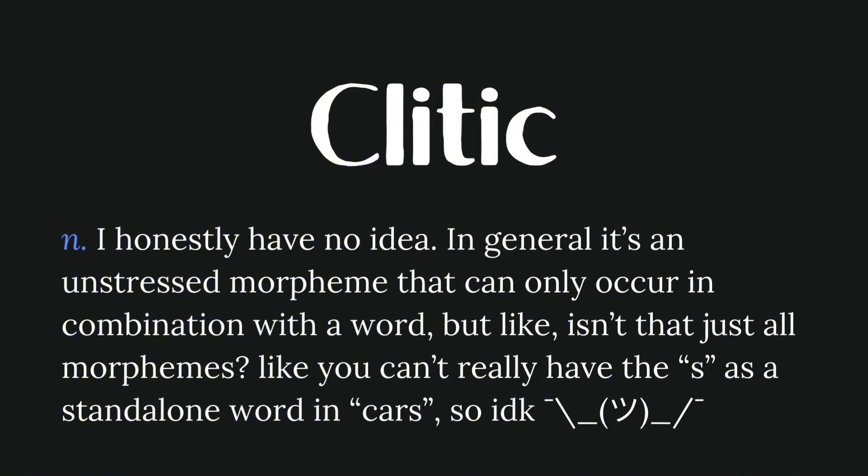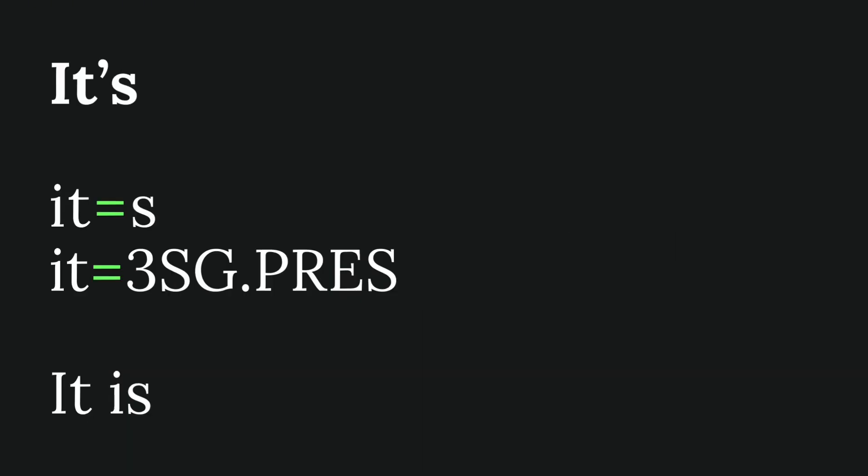The equal symbol is used for clitics. What constitutes a clitic is always a matter of debate, so I won't define them here since it varies greatly depending on the language. It really depends on how you want to use it combined with the general consensus of academic literature about the language you're working with. Some consider the apostrophe-s in 'it's' — the contraction of 'it is' — to be a clitic, so you would gloss it as 'it' with the clitic symbol, then 'third person singular present.'